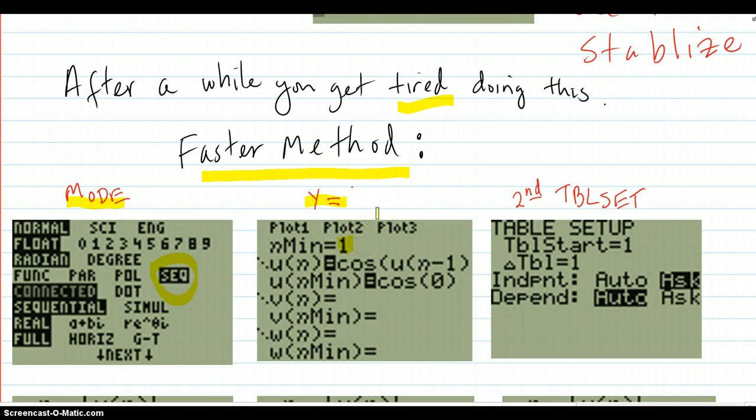Then you put in cosine of u(n-1). So u(n) is the values in the sequence, and they're created by having cosine of the previous value in the sequence. Where are you going to get these letters? Well, u is on the calculator.